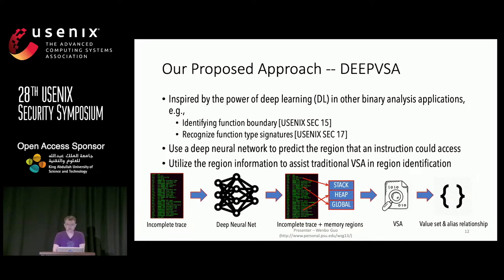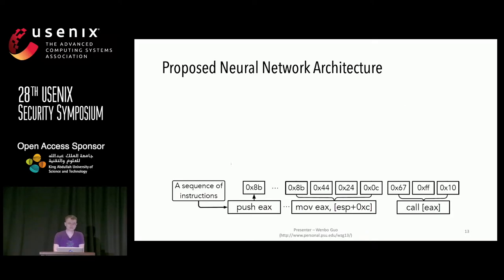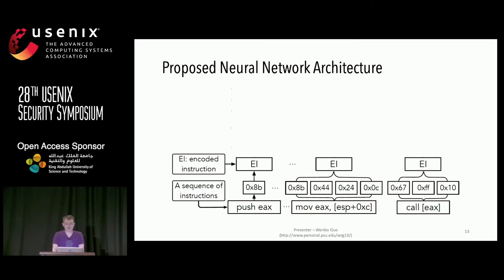The diagram here shows the entire process. First, we train our neural network to predict regions and then utilize the region information to assist traditional VSA in memory region identification and alias identification. Our proposed network takes as input a bunch of disassembly machine code. It will transform the machine code within each instruction into an embedding. We then have a sequence of embeddings, where each embedding encodes information within each instruction — essentially a hidden representation of each instruction within an execution trace.